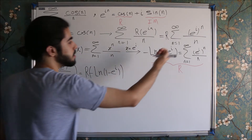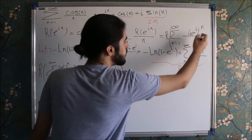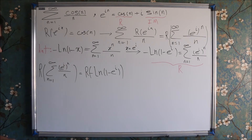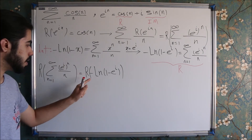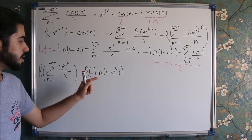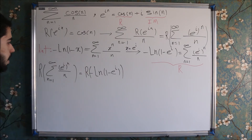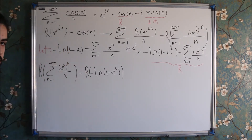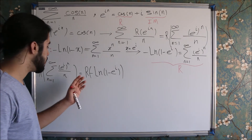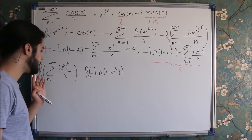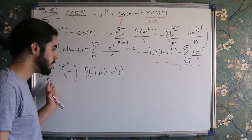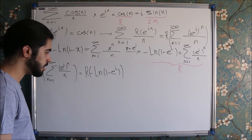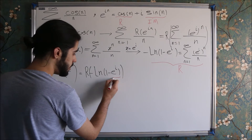This infinite sum, which is exactly the same as our original series, is equal to the real part of minus ln of 1 minus e to the i. So if we find the real part of this expression, we have found our answer. Now we should work on this expression and find its real part.